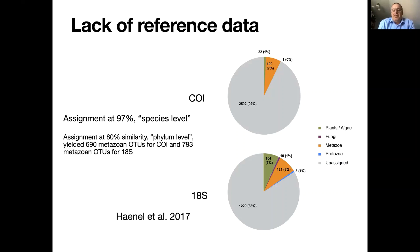Almost as many with the 18S — up to 83%. And then if you go to a much lower threshold, what they call the phylum level threshold, a cutoff at 80%, then you get more of the reads that can actually be assigned to a phylum. So you get 690 metazoans that you can assign to phylum for CO1, and around 800 for the 18S. But there is still a large number of reads that cannot be assigned even to phylum.